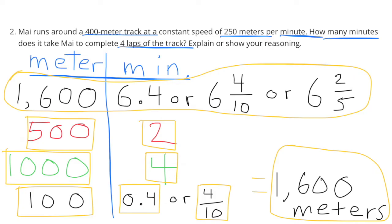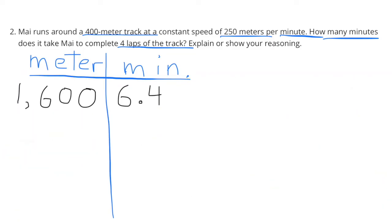So it takes Mia six and four-tenths of a minute to go 1600 meters, or four laps around her 400-meter track.